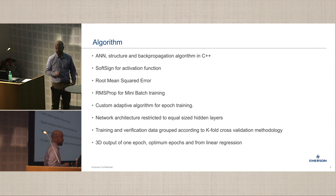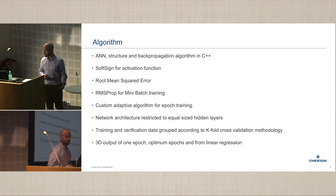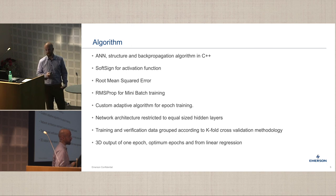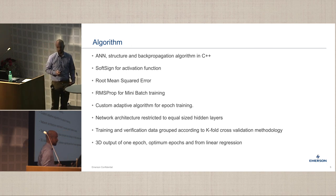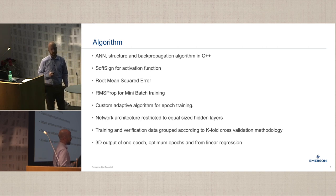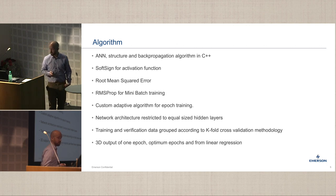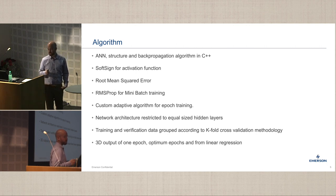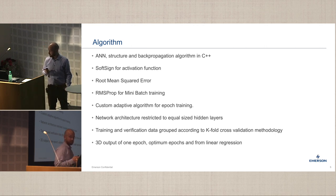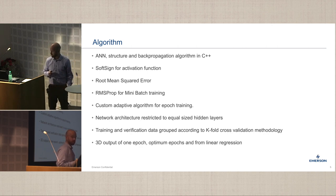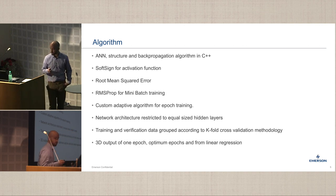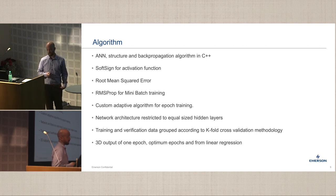The algorithm we used is an ANN — artificial neural network. The structure and backpropagation algorithm we have in C++. We ended up using SoftSign for our activation function. We did spend quite a lot of time trying different activation functions, but this one by far gave us the best result. We use root mean squared error with RMS for mini-batch training. The network architecture is restricted to equal-sized hidden layers, and the training and verification data were grouped according to the k-fold cross-validation methodology.